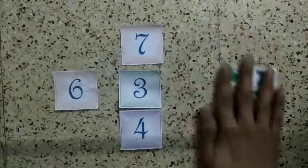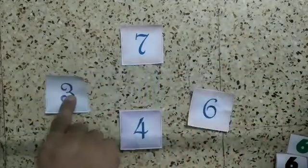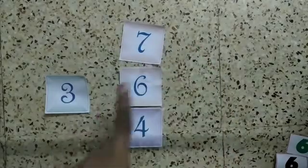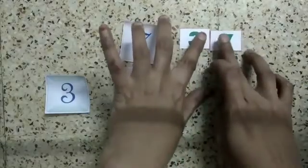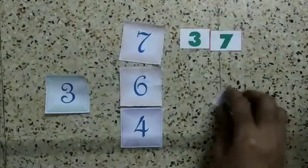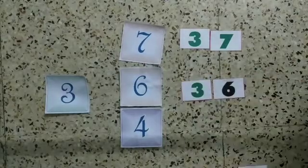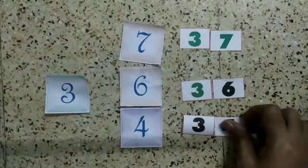Now what is the next number we have here? 3. So I am going to change this to 3 here. Now 3 and 7 we can join, so 3 and 7 is 37. 3 and 6 is 36. 3 and 4 is 34.